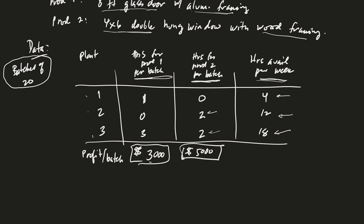So what do we want to do? We want to figure out how many windows to make. We need to figure out how many of product one and how much of product two to construct. The big question here is, how do we set this problem up?